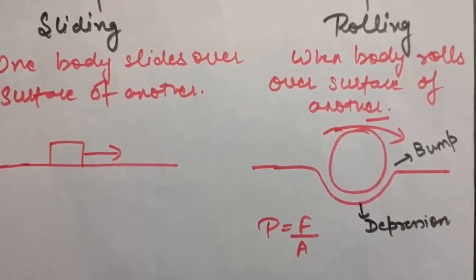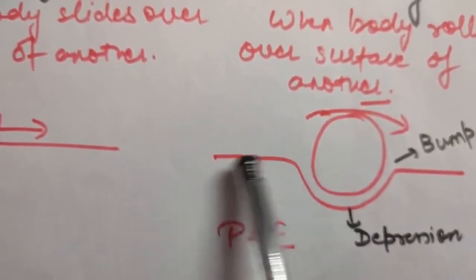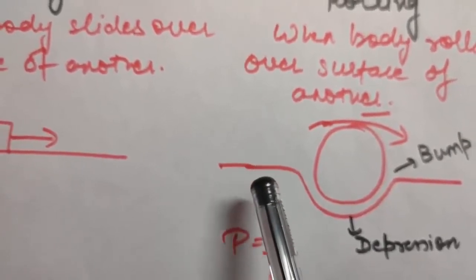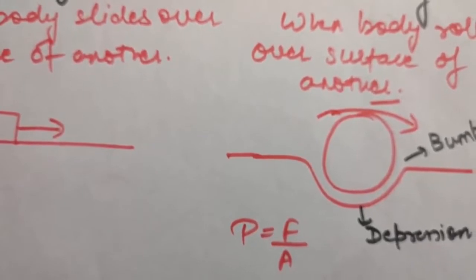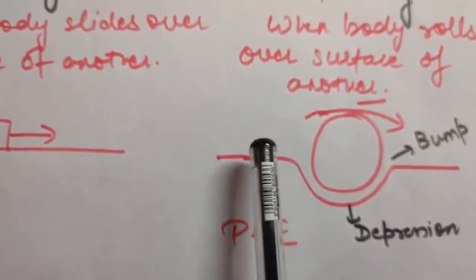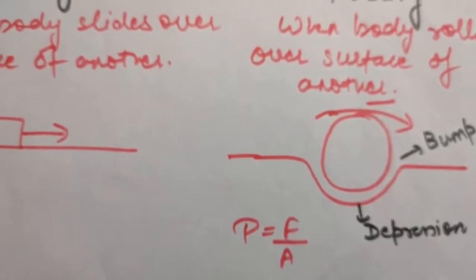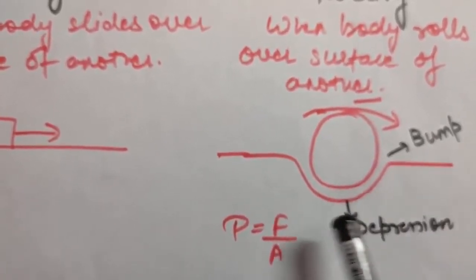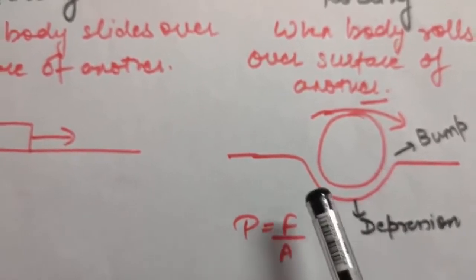Now let us discuss the cause of rolling friction. Look at this diagram. When the wheel is on a level track, a very small area of contact exists. As pressure is inversely proportional to area, a large pressure is created. Due to this high pressure, a depression is created below the surface of the wheel and a bump is created in front of it.